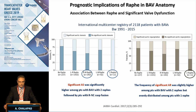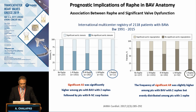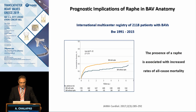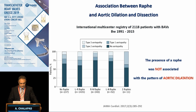Understanding the anatomy is important because it predicts the functional status. According to the number of raphes, we see different functional categories with higher incidence of aortic valve stenosis and higher incidence of aortic valve insufficiency in cases with two raphes, which represents type 2 according to the Sievers classification. And of course, the functional status can affect mortality in these cases.